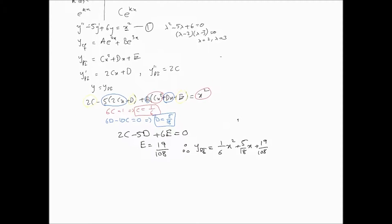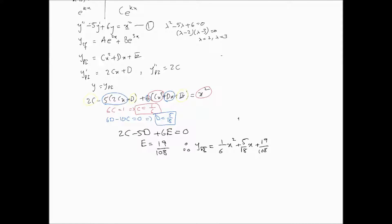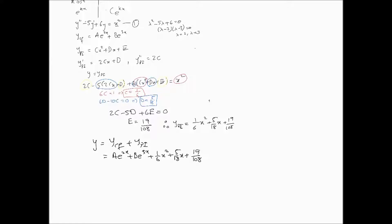We are now in a position to write the full general solution. The final solution is y = ycf + ypi = Ae^(2x) + Be^(3x) + (1/6)x² + (5/18)x + 19/108. This is the general solution to the differential equation. We now apply initial conditions: y(0) = 1 and y'(0) = 1.